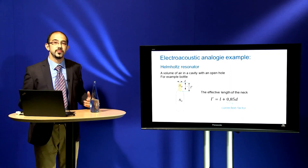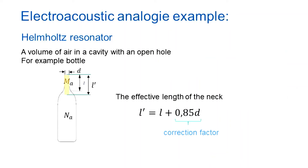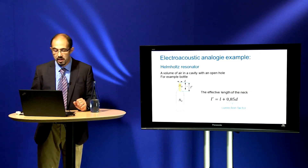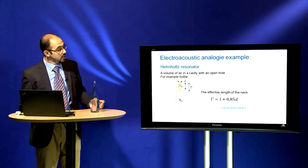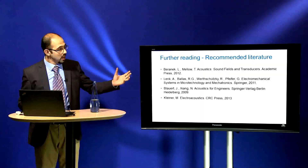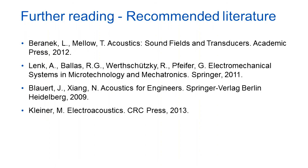If we want to calculate this resonance frequency, we should first calculate the mass. The effective length of the neck is longer than the actual length of the neck; therefore in most cases we use a correction factor — in this case 0.85 multiplied by d. At the end, I would like to suggest some further reading, where you can find much more information on electromechanical and electroacoustical analogies.